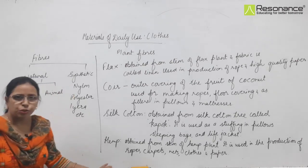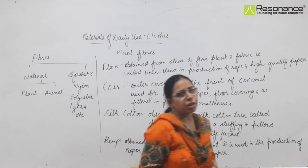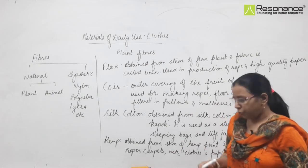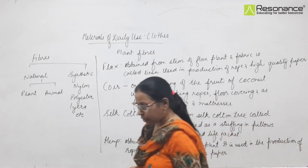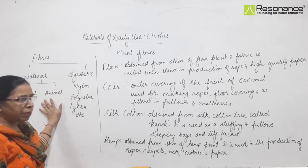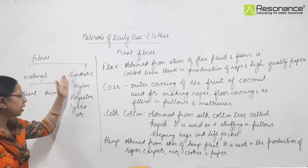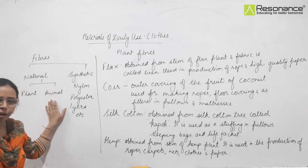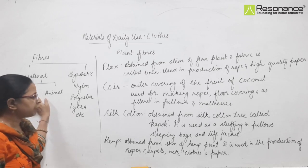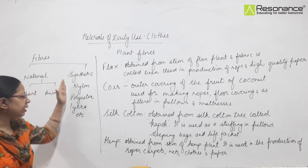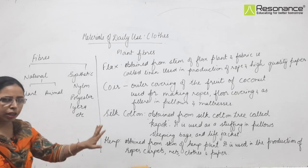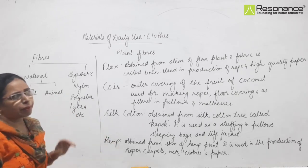Hello students. In the last classes we have discussed about this chapter - materials of daily use, that is clothes, also known as fiber to fabric in your NCRT book. We have discussed a lot about fabrics and fibers and various basic terms. We have discussed about fibers which are natural in nature - plant fibers and animal fibers. Synthetic fibers are yet to be discussed.